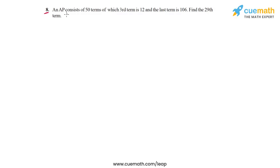The problem statement in question 8 is as follows: An AP consists of 50 terms of which the third term is 12 and the last term is 106. We have to find the 29th term of this AP.